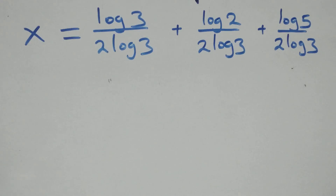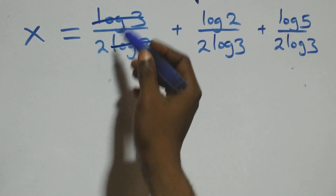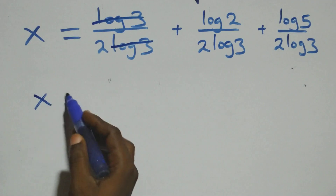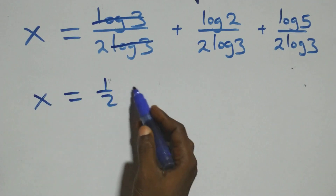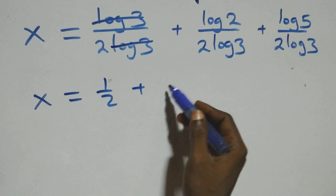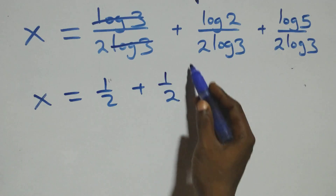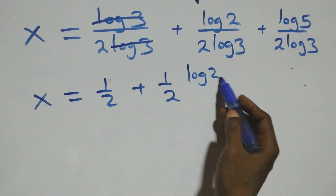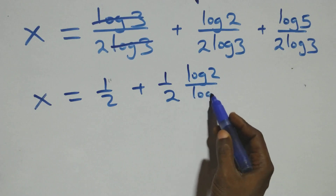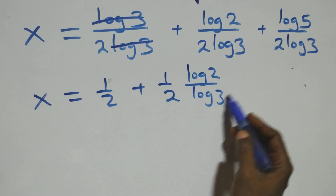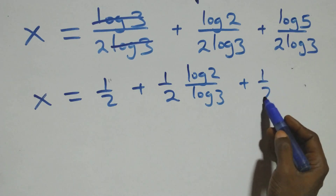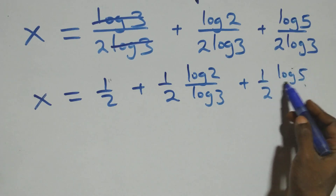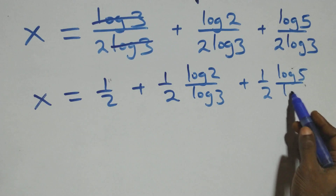In the first term, log 3 cancels log 3, leaving 1 over 2. So x equals 1/2 plus log 2 over (2 log 3) plus log 5 over (2 log 3).